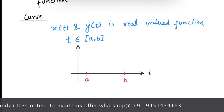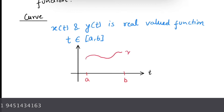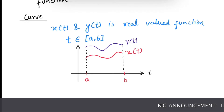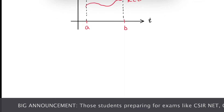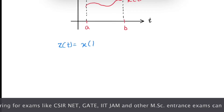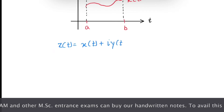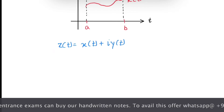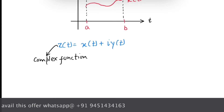Suppose this is function x(t) and this is y(t). Now let's construct a complex function using x(t) and y(t). So z(t) = x(t) + i·y(t). This z is a complex function. Now let us see the function z(t) on the Argand plane.